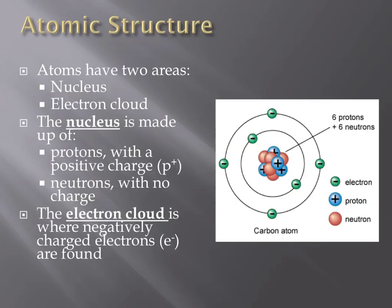Atoms are made up of three different types of particles found in two different locations. Protons, or positively charged particles, and neutrons, particles with no charge, are located in the nucleus of an atom. The nucleus contains almost all of the mass of an atom. The rest of the atom is just relatively empty space. The second location within the atom is the electron cloud. Very small, negatively charged particles move about spaces in the electron cloud called orbitals.